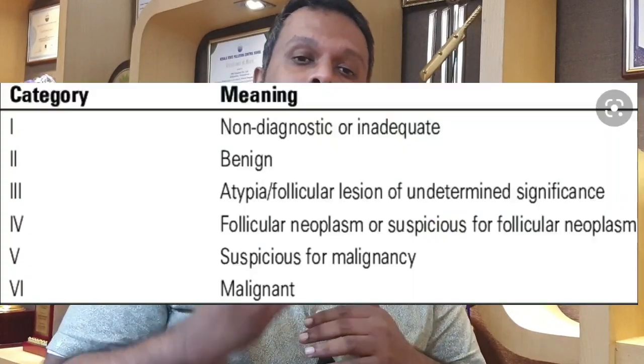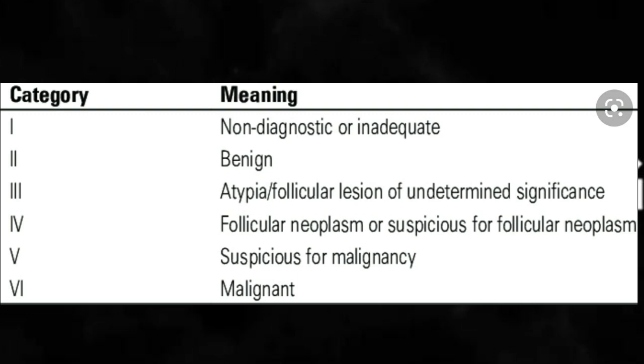For the remaining categories 3, 4, 5, and 6: Bethesda 6 carries the highest risk — almost 99% probability of cancer. Bethesda 5 carries approximately 75% risk of cancer. Bethesda 4 carries 30–40% risk, and Bethesda 3 carries 15–20% risk. Based on the risk category, patient age, gender, nodule characteristics, and FNAC report, we plan further treatment. To reiterate, 80% of cases land in Bethesda 2 — not a cancer lesion.